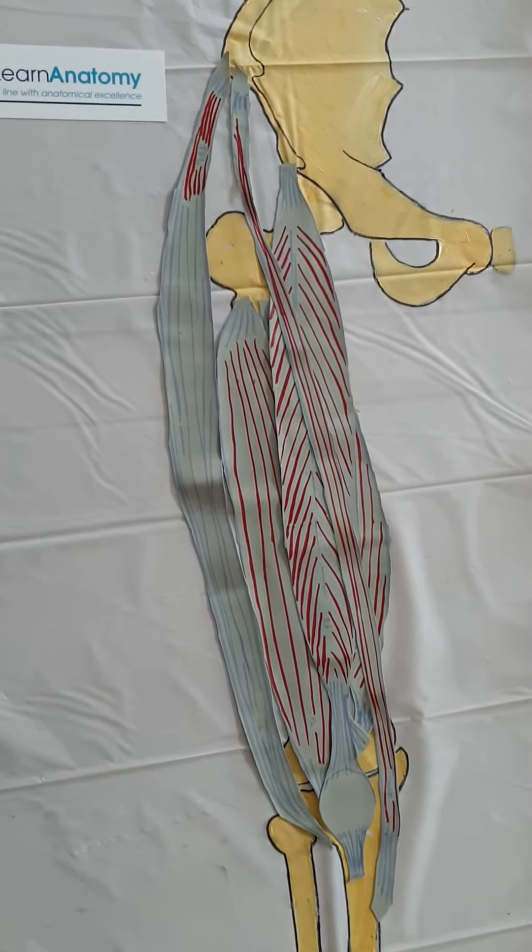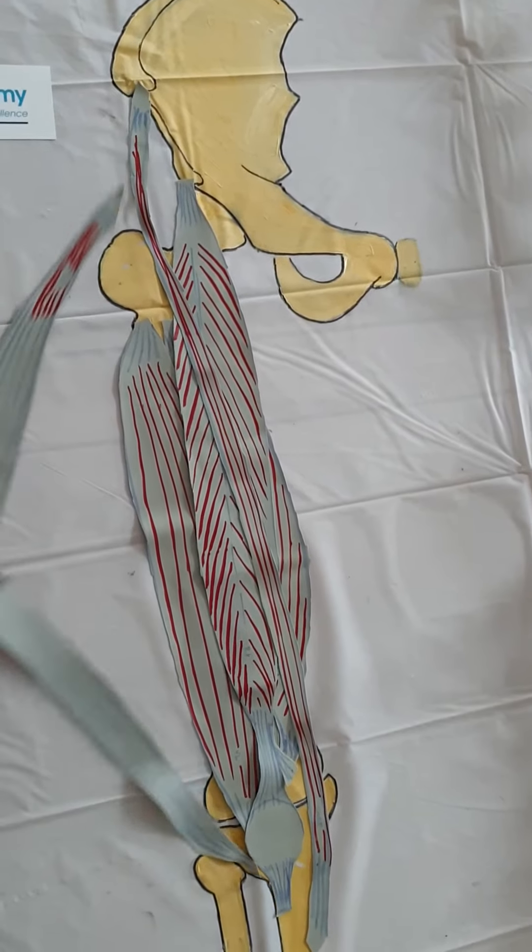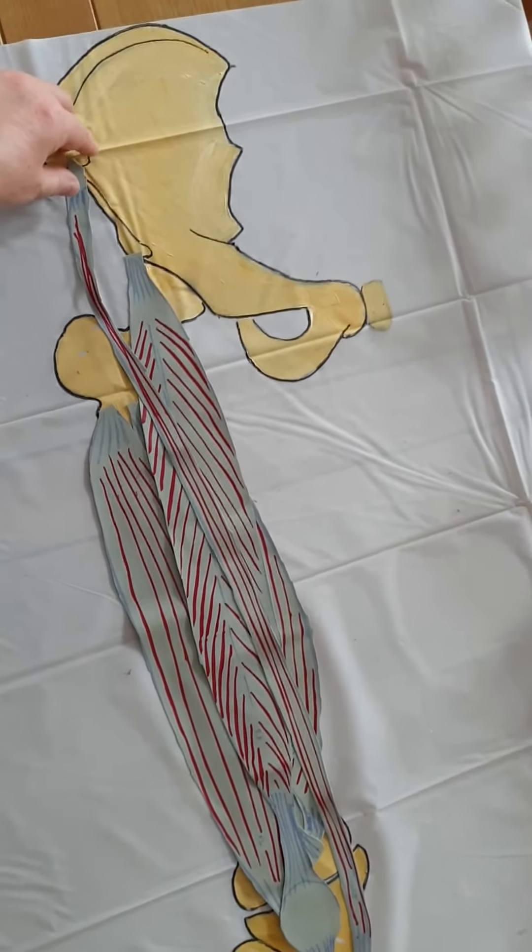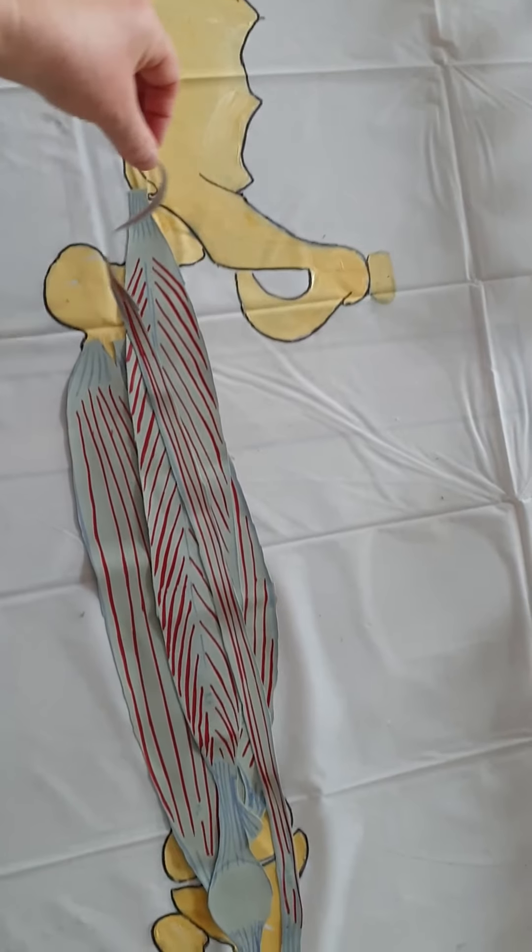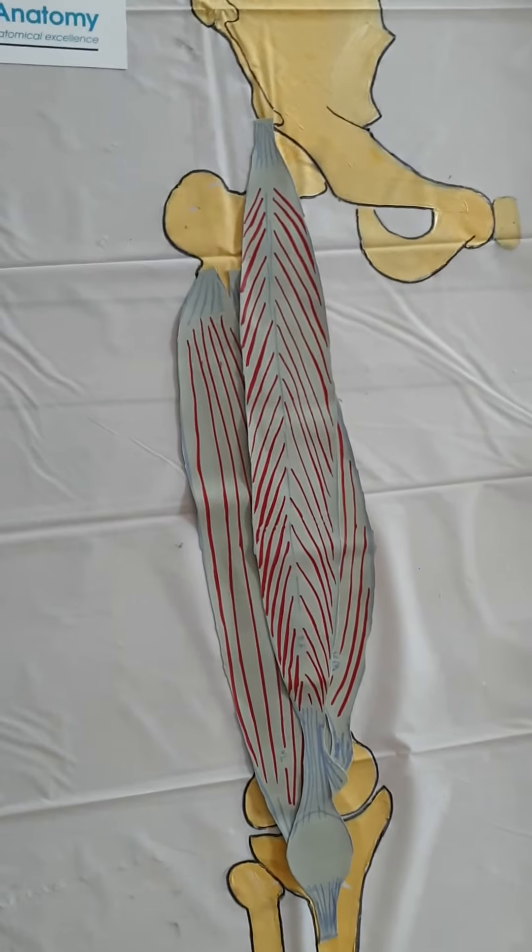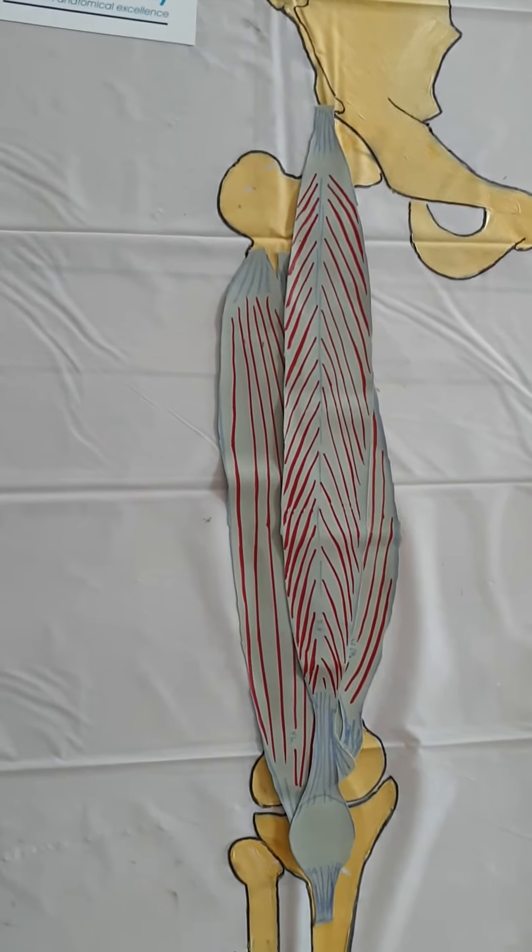Now I want to look at the quadriceps group. First, I'm going to take away the tensor fasciae lata and its IT band, move that out of the way. And I'm going to take away the superficial sartorius muscle, which leaves behind my quadriceps group, my quadriceps femoris group—named quadriceps because of the four heads, or four muscles.